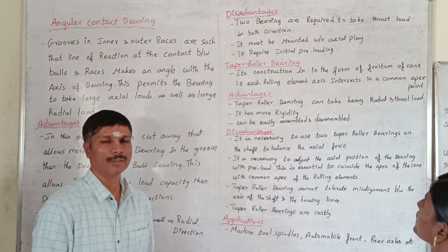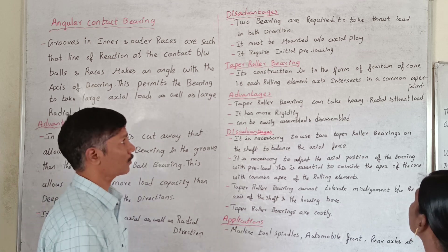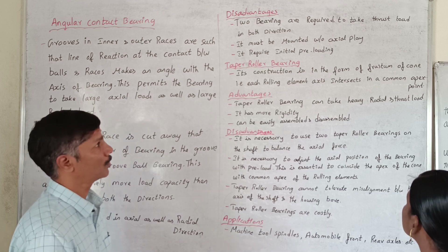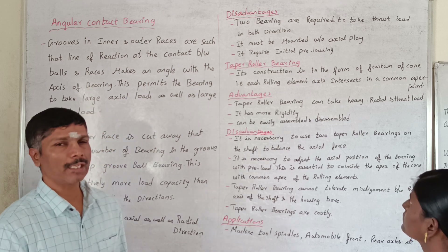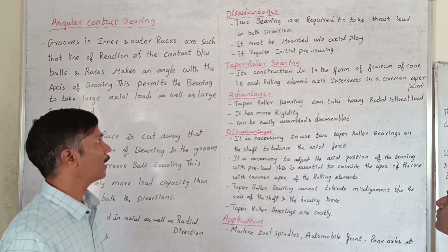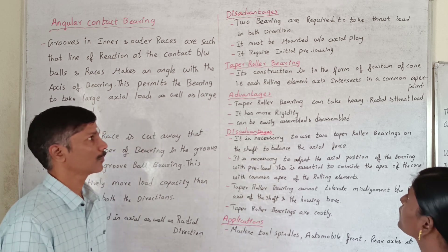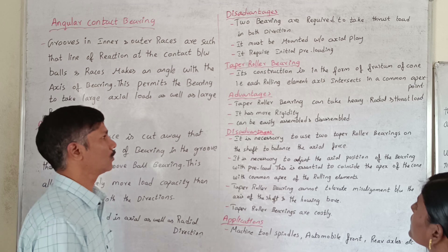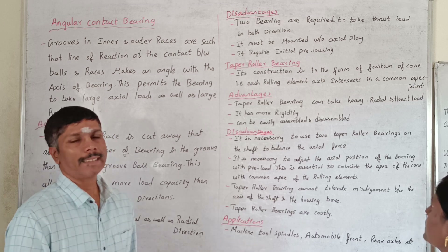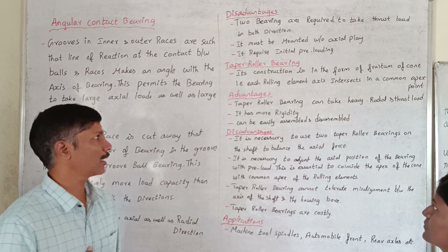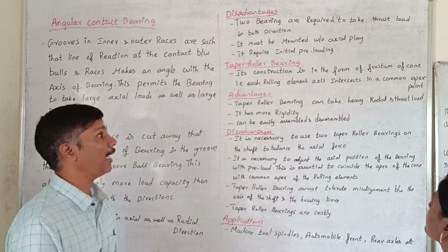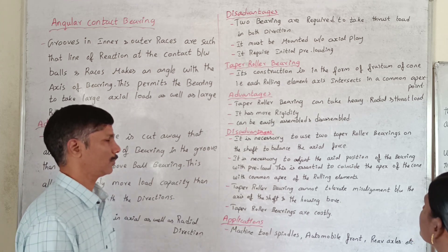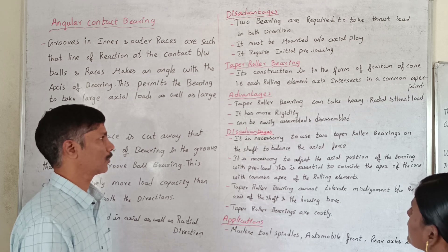Tapper roller bearing: its construction is in the form of a frustum of a cone, such that each rolling element axis intersects at a common apex point. It can take heavy radial and thrust load. It has more rigidity and can be easily assembled and disassembled. It is necessary to use two taper roller bearings on the shaft to balance the axial force.